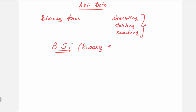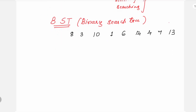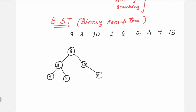In a binary search tree, how do you place elements? Suppose the list is: 8, 3, 10, 1, 6, 14, 4, 7, 13. You take the first element 8; next 3, which is lesser than 8, you place towards the left; next 10, which is greater than 8, you place towards the right. 1 is lesser than 3; 6 is greater than 3; 14 is greater than 10; 4 is less than 6; 7 is greater than 6; 13 is less than 14. This way you construct the binary search tree.